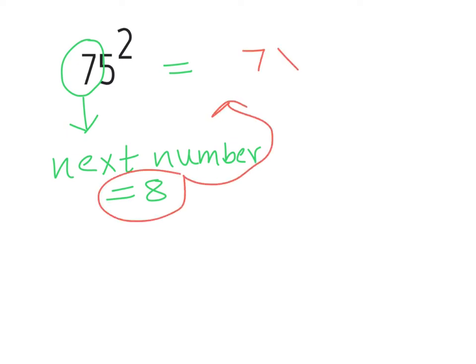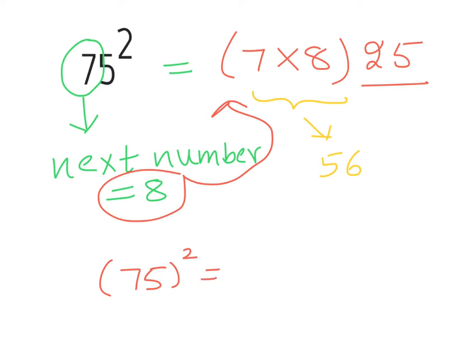That is 7 is the first number. So 7 times 8 and 25 we will write at the end by putting a blank. So we know that 7 times 8 is 56. So finally if we write it in our combined form we can say that square of 75 is 56 from 7 times 8 and then 25 from the end.